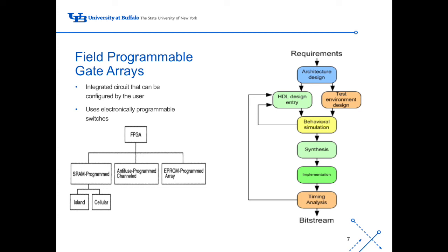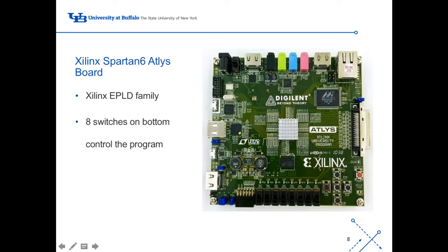Now to get into the actual hardware of mining Bitcoin — these are your field programmable gate arrays. Shown is a flowchart of how a field programmable gate array works and the different types available to any user. A field programmable gate array is an integrated circuit that can be configured by the user. It uses electronically programmable switches in order to tell itself what to do, and the user controls these switches. Here is the Xilinx Spartan 6 Atlas board, the board that we used in labs. It is a member of the EPLD family. EPLD stands for Erasable Programmable Logic Device. The reason it is erasable is because it can be programmed more than one time. The eight switches on the bottom control the program, implemented using the input-output pin placement post-synthesis function, which can be found within software.